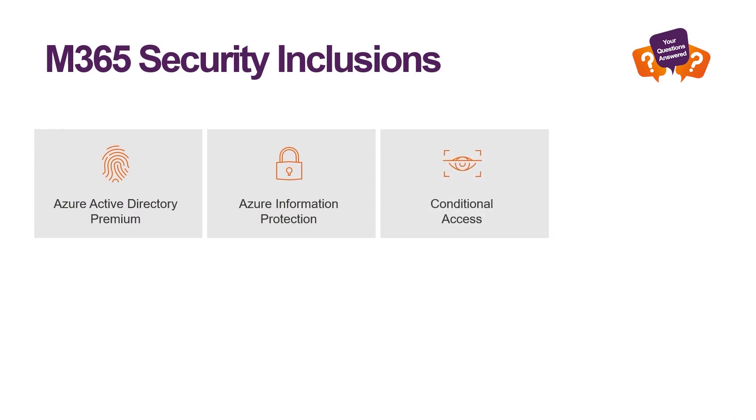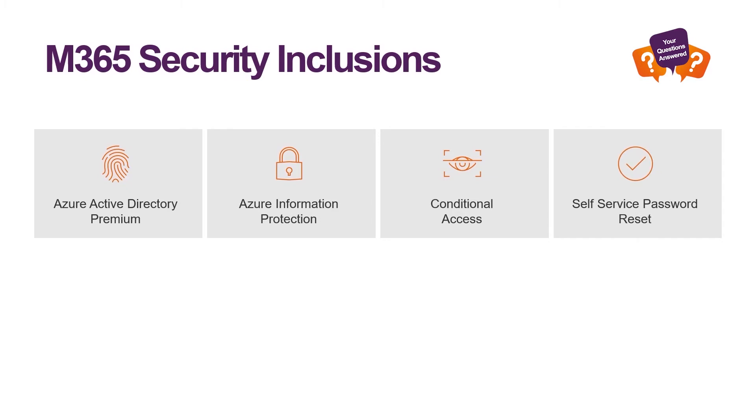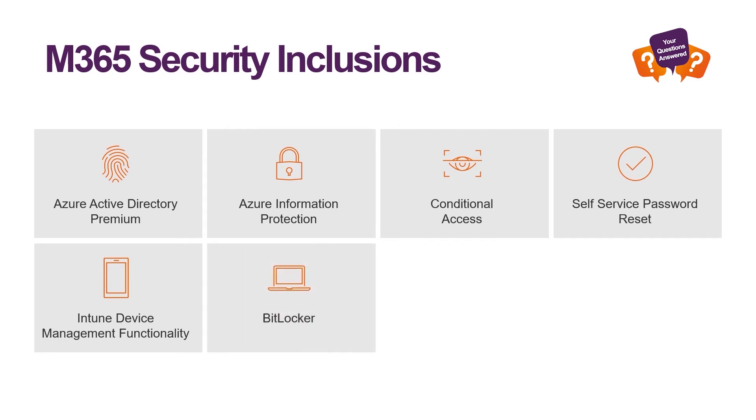There's also Conditional Access, which helps control what happens when someone comes in from a personal or mobile device outside your network — you can control what they have access to, perhaps a constrained set of resources compared to when they come in from a company-owned device on your network. Also included are self-service password reset, which is terrific for reducing help desk needs; Intune for management of mobile and remote devices; BitLocker for securing company-owned devices; and Windows Hello for secure authentication, and more.